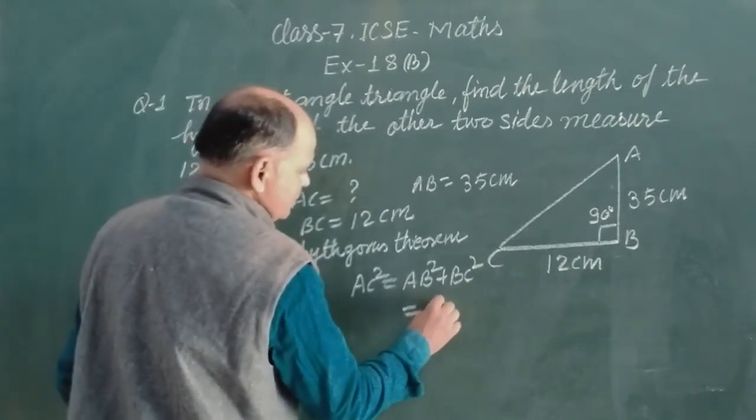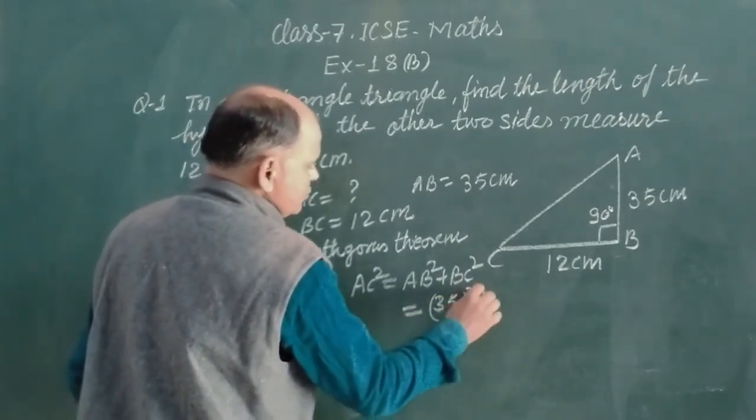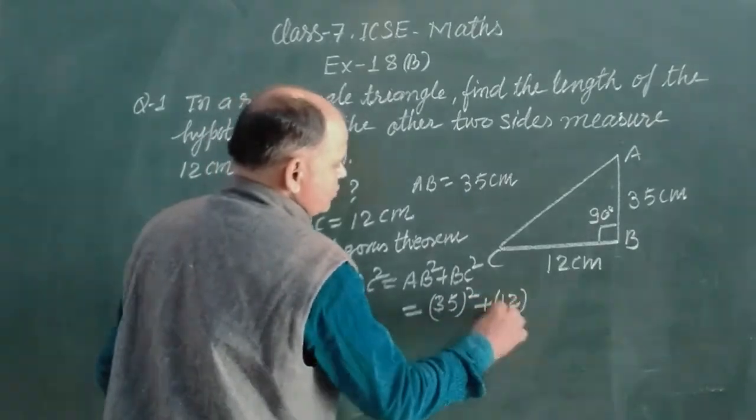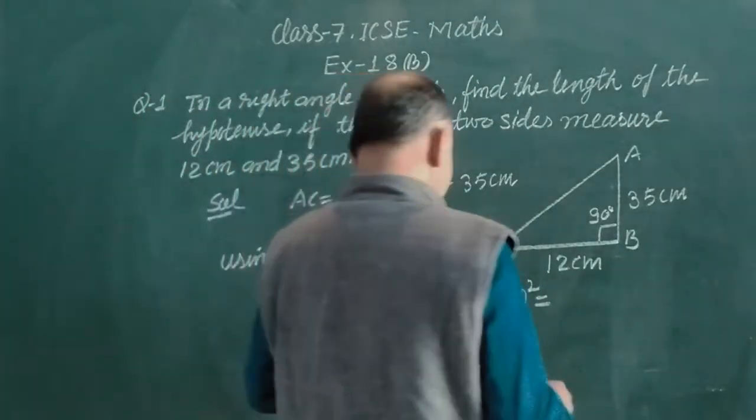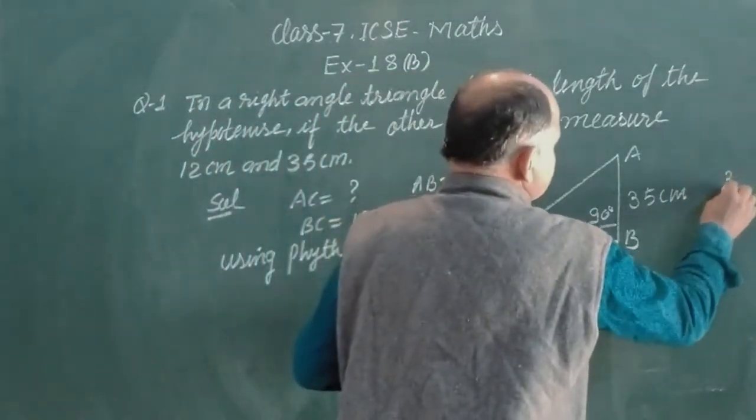So AC means how much? This is 35 square plus 12 square. So 35, we multiply 35 to 35.